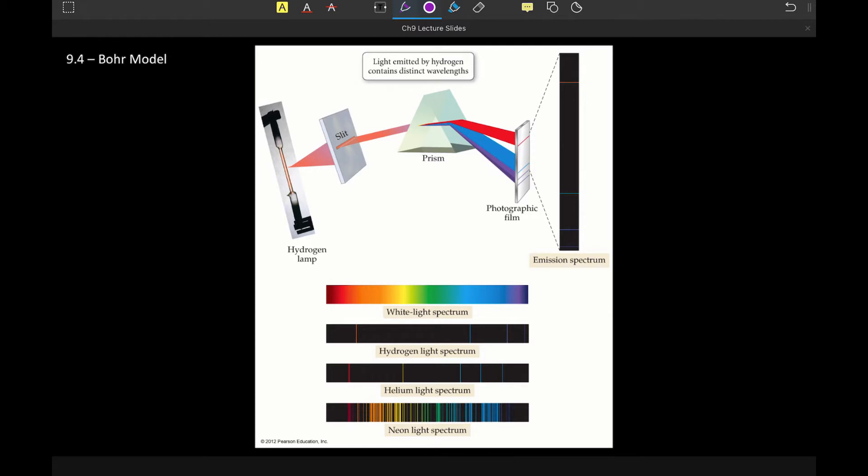So we said previously the whole point of this unit is because the interactions between light and electrons give us information about what the inside of an atom looks like. And here is where we finally tease that out with the Bohr model.